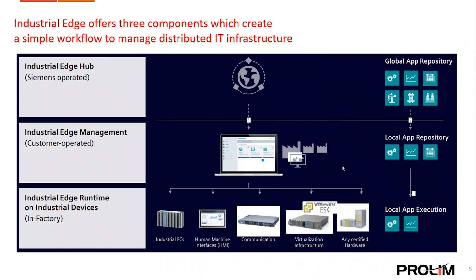Edge Management is a central infrastructure for managing all connected Edge devices — best described as an Edge cockpit. It allows monitoring of the status of each connected device and enables moving Edge apps and software functions to desired Edge devices from the cloud to production. Both Simatic Edge and Sinumerik Edge work with the same Edge management system. Edge devices are classified into many types, with Simatic Edge and Sinumerik Edge being the most commonly used.